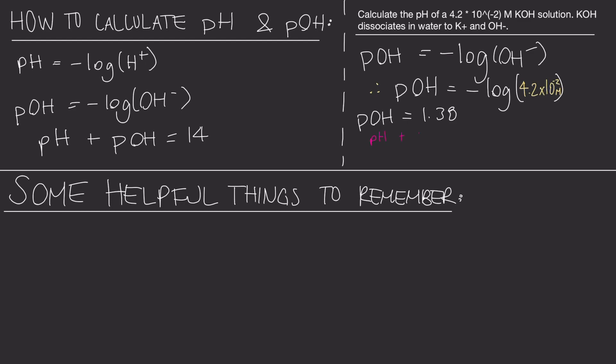Now, plug this pOH into your main equation to solve for that main pH value. You're going to isolate that equation until you get your final answer. Once you subtract 14 minus that number, you should get 12.62. It's as easy as that. Now, you know how to solve for pH.